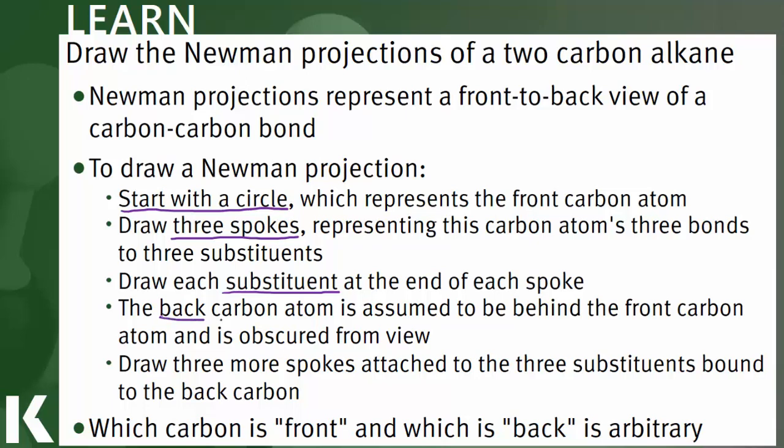We have to remember that the back carbon is not visible to us. It's obscured from view, but we can draw the three substituents bound to that back carbon. And when we do that, we have completed our Newman projection. Thanks for watching.